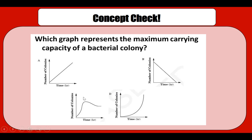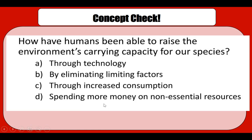That's correct — it's this one here. The other graphs don't show carrying capacity: one grows linearly, one decreases linearly, and one grows exponentially with no leveling off. In the correct graph, we can see overshoot, then dieback, and the carrying capacity is somewhere around here. Now, how have humans been able to raise the environment's carrying capacity for our species?